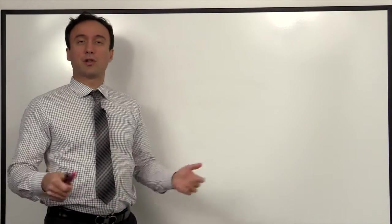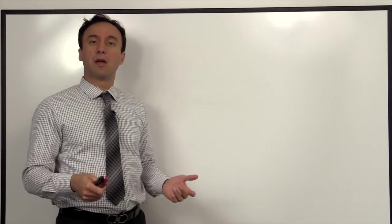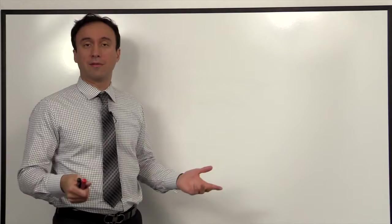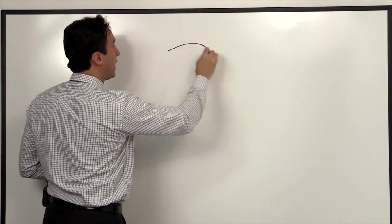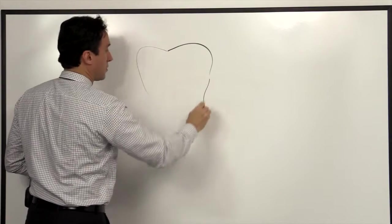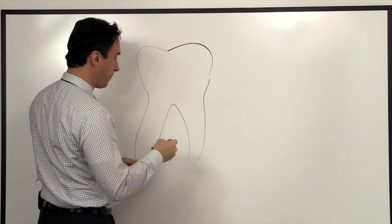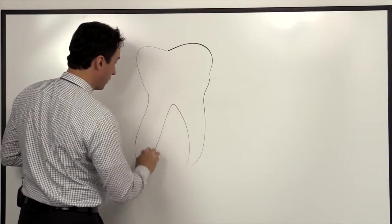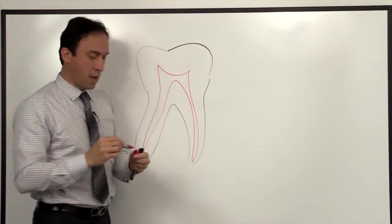Let's take a look at the traditional pulp capping procedure and see how the modern materials help us do this process a lot more efficiently and hopefully even more effectively. If a tooth has significant decay, however it is testing with reversible pulpitis, there is a chance that we could still preserve the pulp by doing an indirect pulp cap.